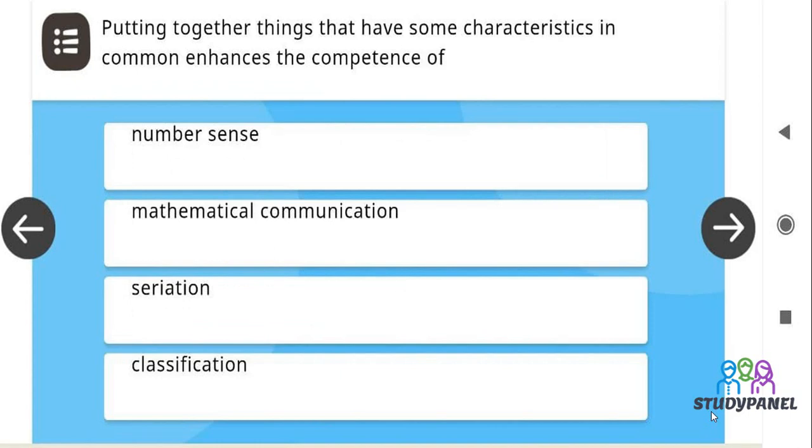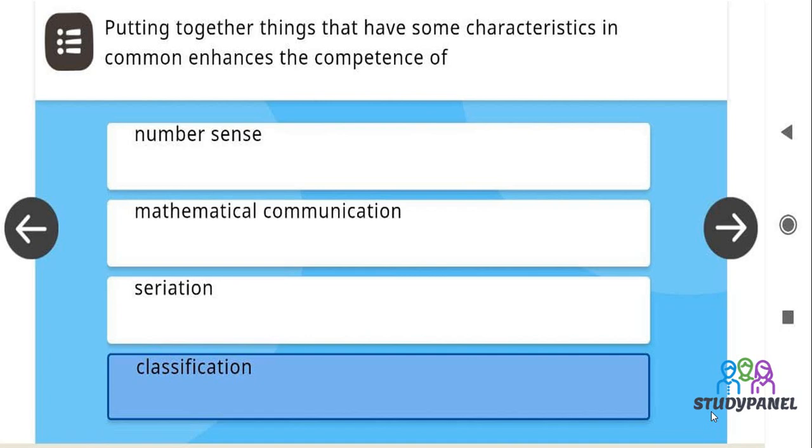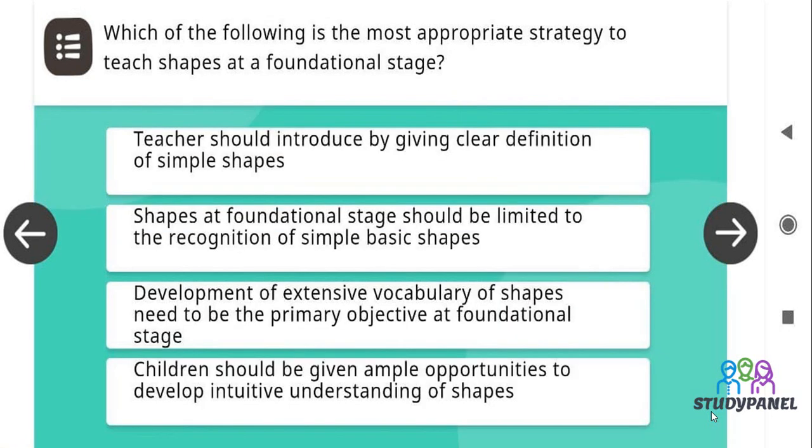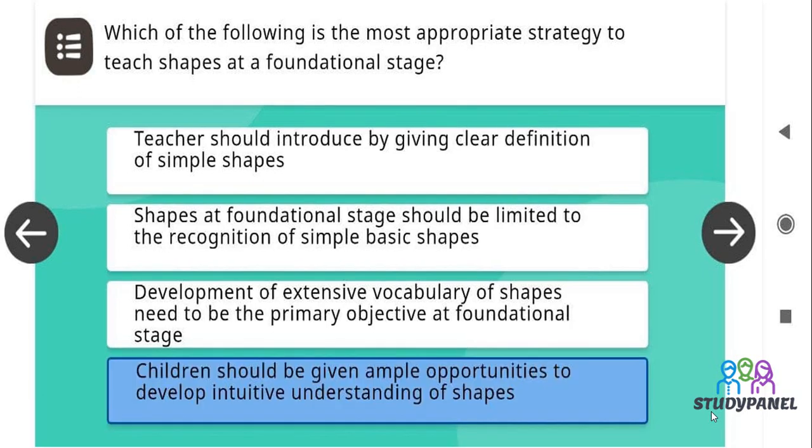Putting together things that have some characteristics in common enhances the competence of classification. Which of the following is the most appropriate strategy to teach shapes at a foundational stage? The correct answer is children should be given ample opportunities to develop intuitive understanding of shape.